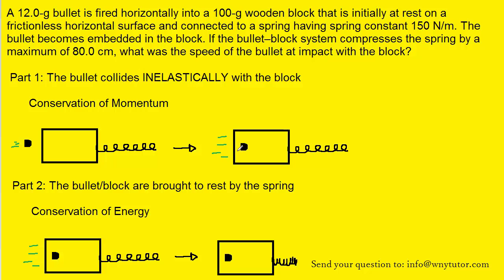Now because of that collision, the block and bullet are propelled forward. And so in part two, what's going on is that block and bullet are being brought to rest by the spring. The spring is compressing as the objects move to the right, and that's going to bring them to rest.